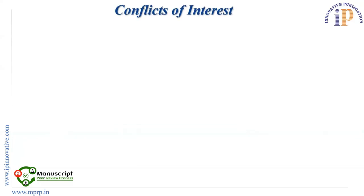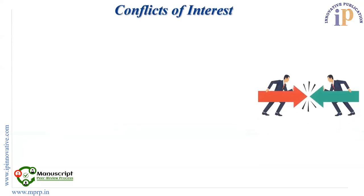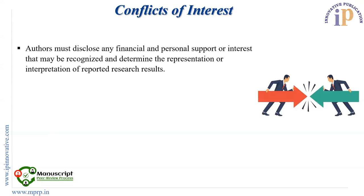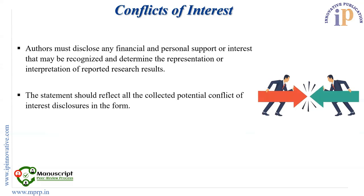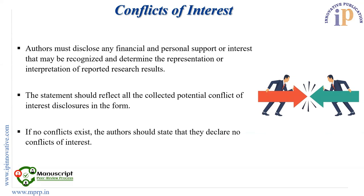Conflict of interest: Authors must disclose any conflict of interest in the form of financial or personal support or interest that may influence the presentation or interpretation of reported research results. The statement should reflect all potential conflict of interest disclosures, and if no conflicts exist, the authors should state that they declare no conflict of interest.